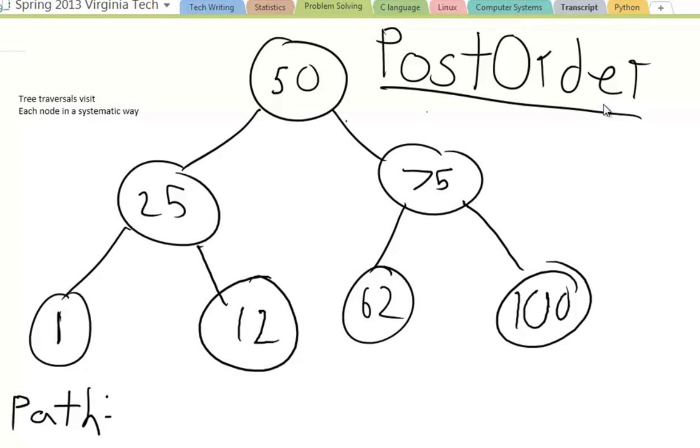What's Gucci everybody, it's AJ here again and today I'm here to talk about the final and third tree traversal and that is the post-order search.